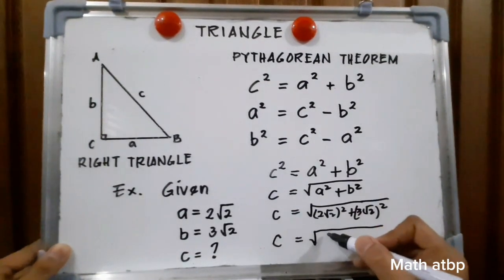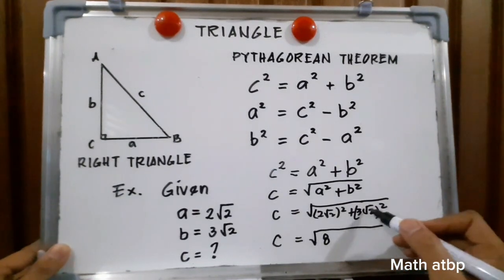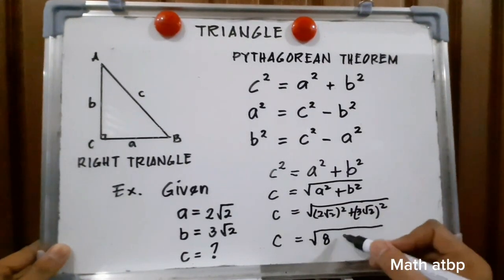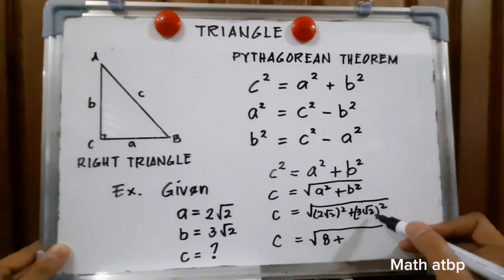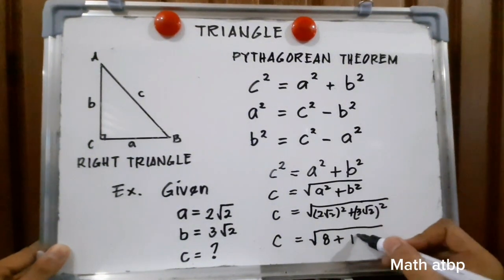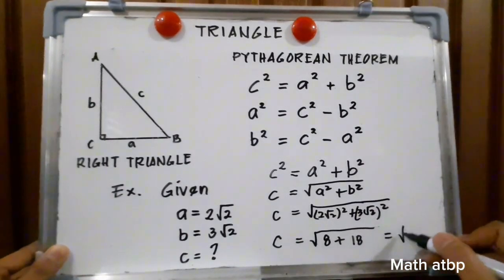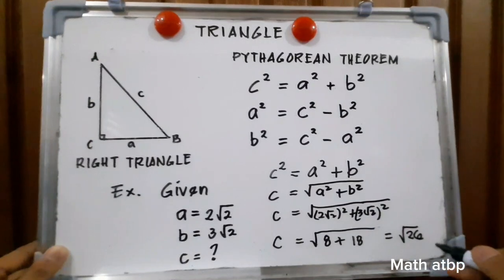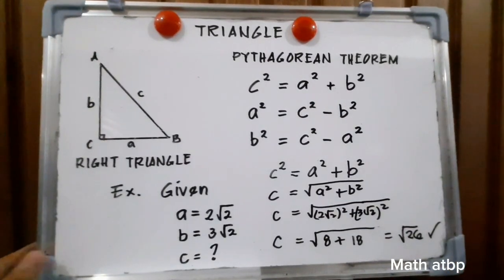So, 4 times 2 is 8. For 3 square root of 2 squared: 3 squared is 9 and square root of 2 times square root of 2 is 2, so 2 times 9 is 18. Therefore, we have c equal to the square root of 8 plus 18, which is the square root of 26. That is our final answer.